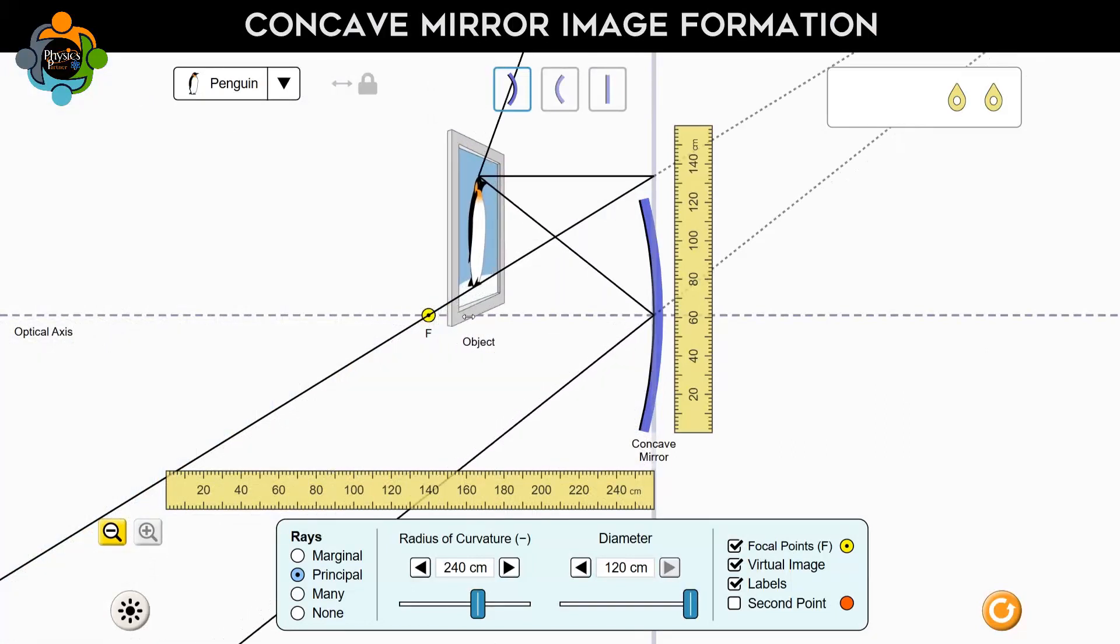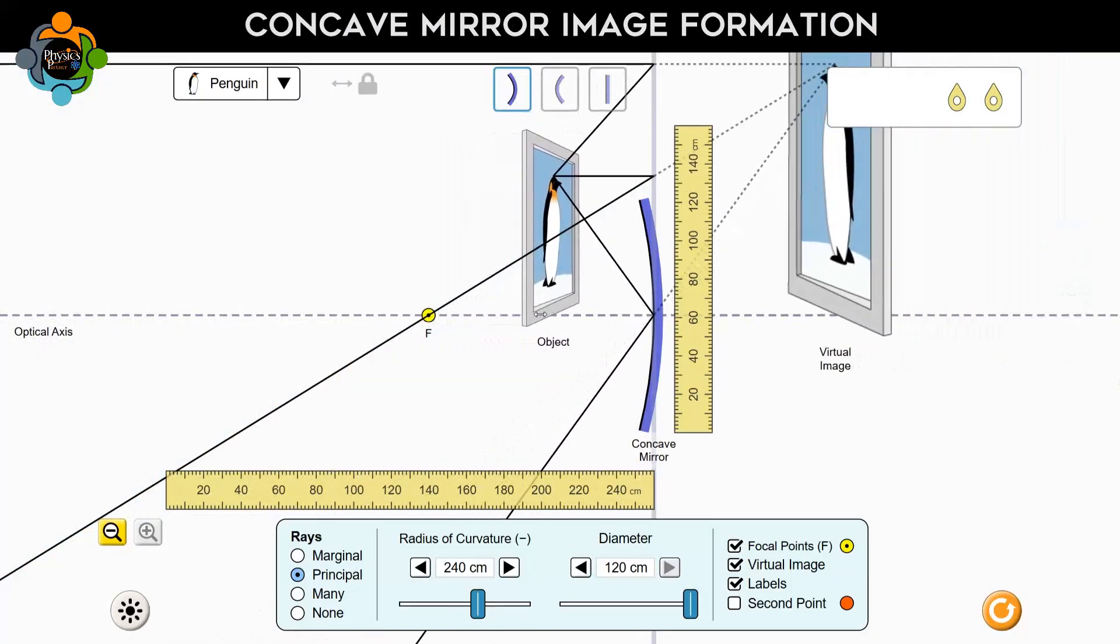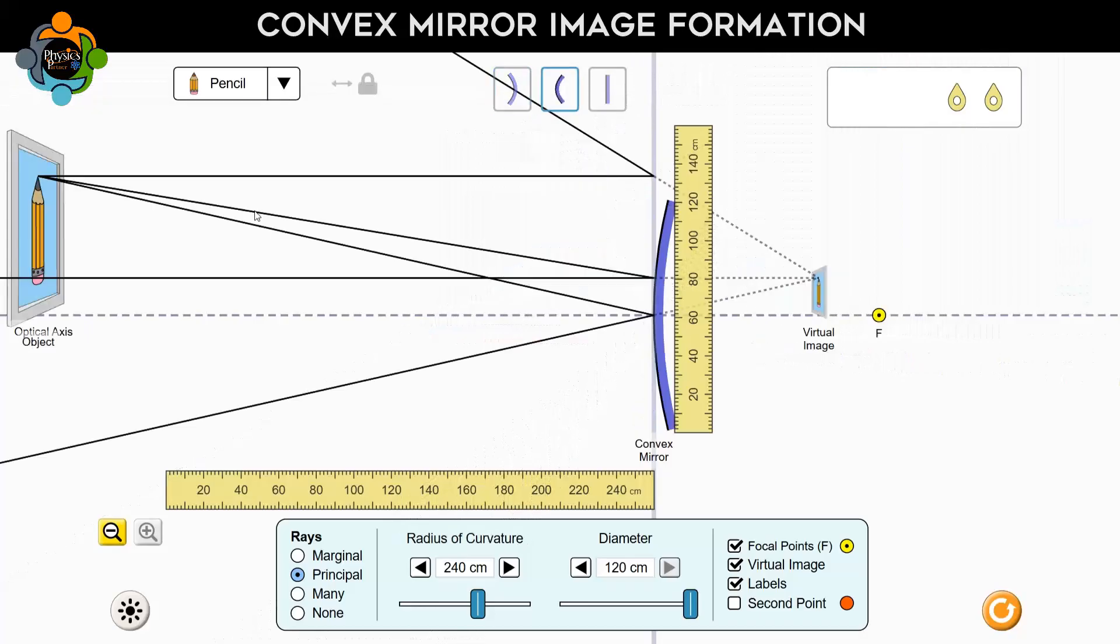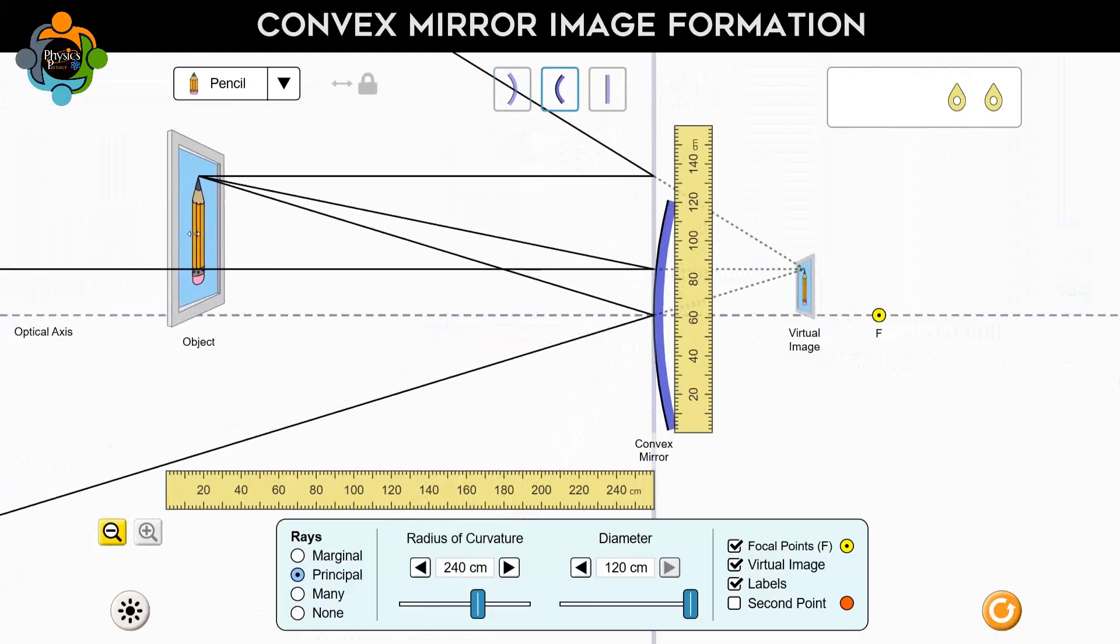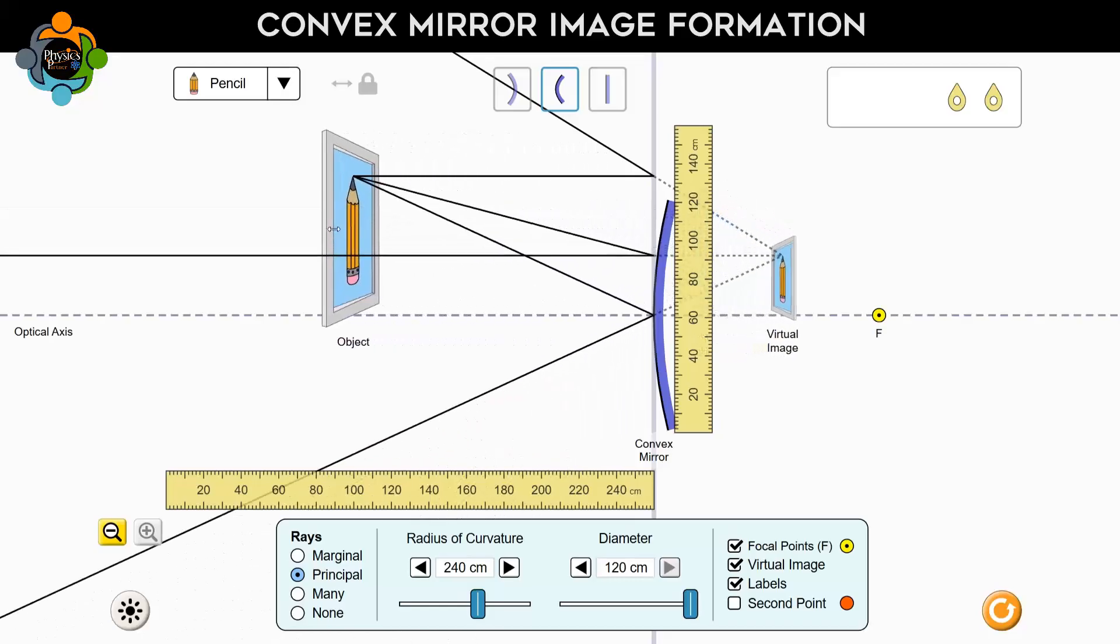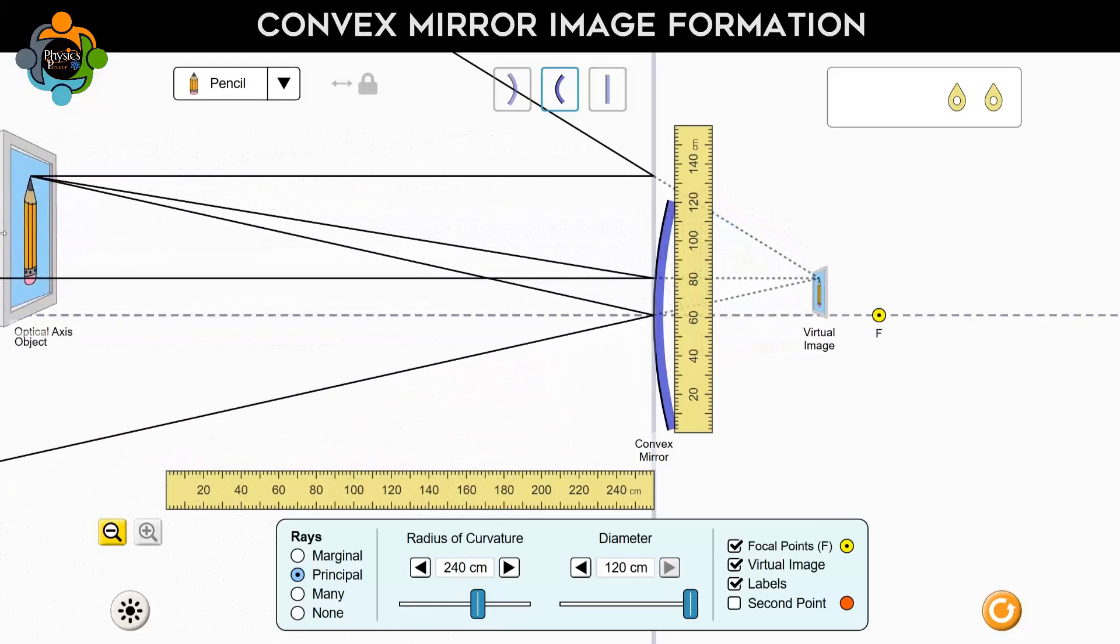However, when an object is placed very close to a concave mirror, specifically between its pole and its focus, the image formed becomes virtual, erect, and still enlarged. A convex mirror, however, consistently forms images that are always virtual, erect, and diminished compared to the actual object.